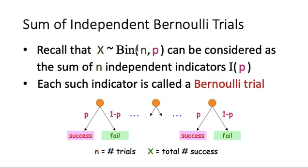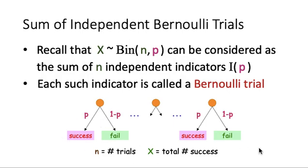Let us review what a binomial random variable is. Suppose that X is a binomial random variable with parameters N and P. This random variable can be considered as the sum of N independent indicators I(P), where the parameter is P. It corresponds to N trials, each with success probability P. For each trial, we look at whether it is a success or fail, and count the total number of successes among all N trials. Each of these trials is called a Bernoulli trial.